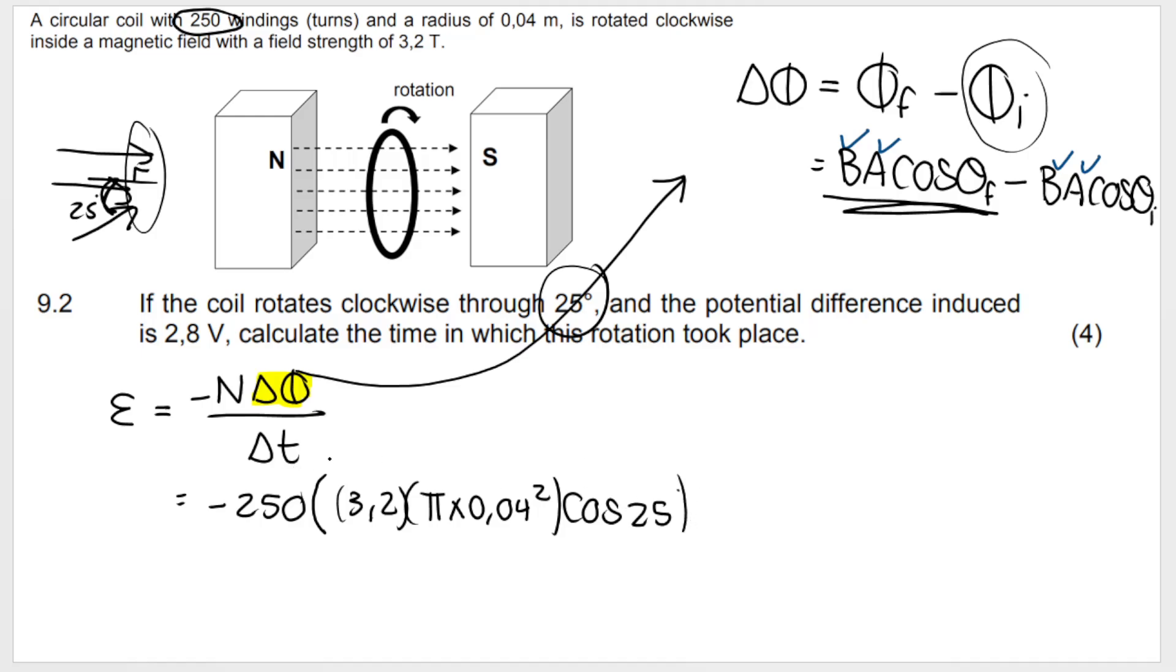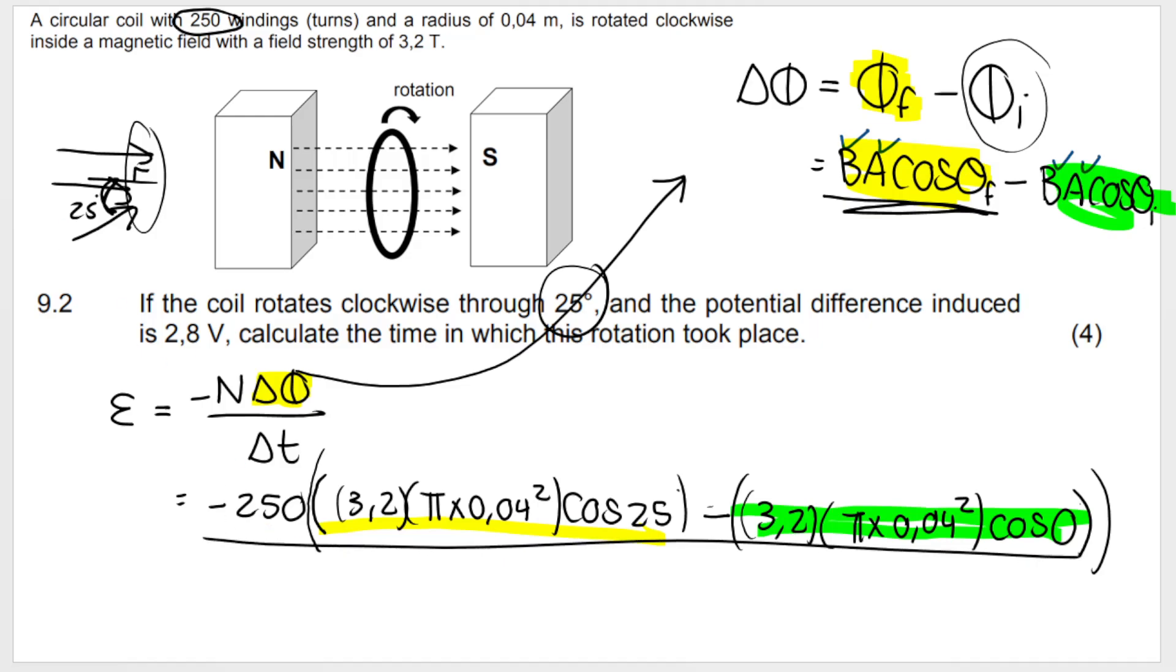I know I'm using a lot of brackets here, but use too many rather than too few. This is my final magnetic flux worked out: B (3.2) × A (π × 0.04²) × cos 25 degrees. We rotate through 25 degrees, so we end up with an angle of 25 degrees relative to the normal. Minus my initial magnetic flux using initial angle, which was 0: minus 3.2 × π × 0.04² × cos 0. All divided by time, and the induced EMF is 2.8 volts.